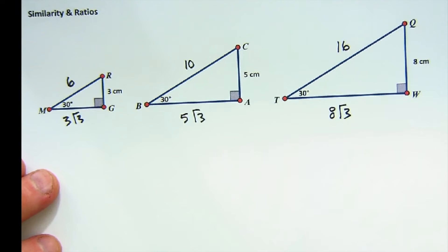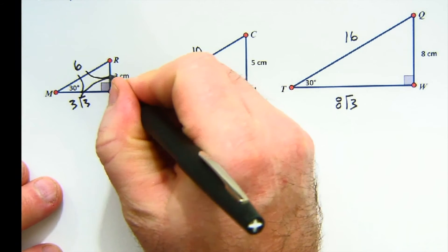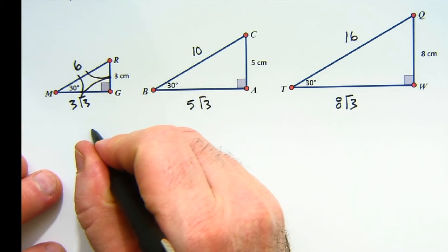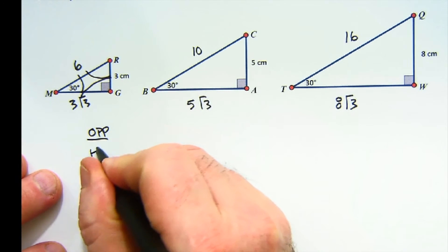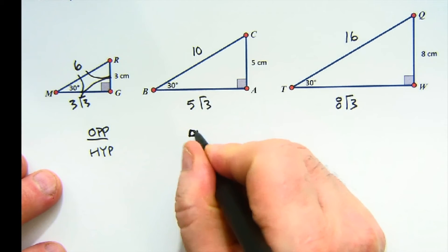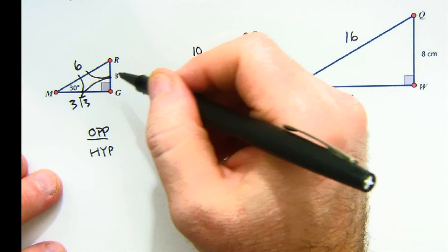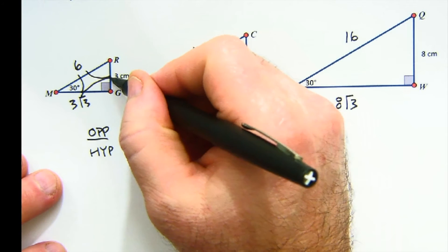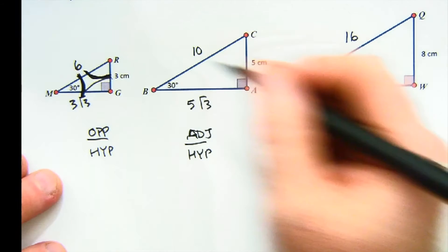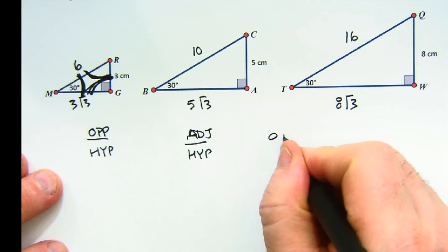There are basically three ways to compare sides. One way is to compare an opposite side to a hypotenuse. Another is to compare the adjacent side to the hypotenuse. So if we're using the 30-degree angle, opposite to hypotenuse would be this comparison, adjacent to hypotenuse would be this comparison, and the last comparison would be the opposite and adjacent sides compared to each other.